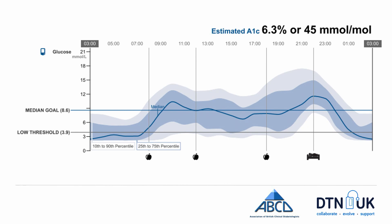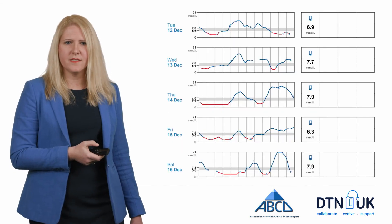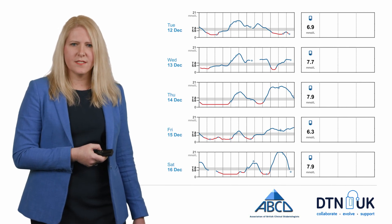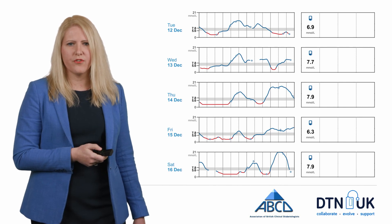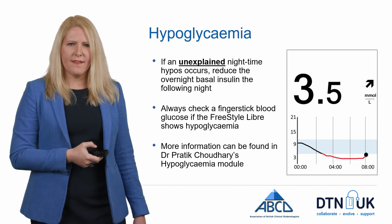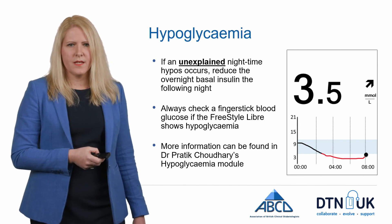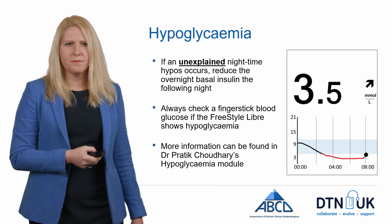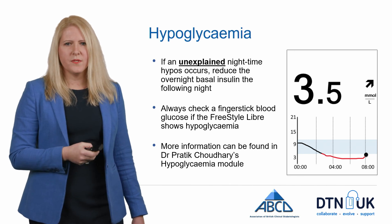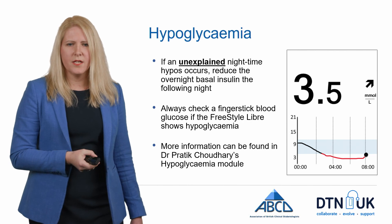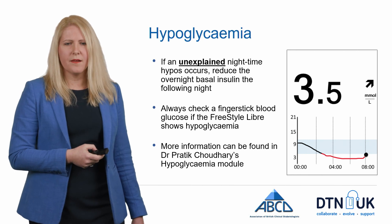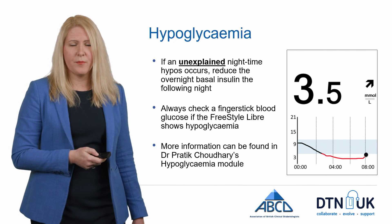Here's another example of an ambulatory glucose profile. The most striking thing is that the dark blue median line is in the hypoglycemic range overnight — and that's a concern. When you look at this on the daily traces it becomes very apparent that this person is experiencing quite a lot of hypoglycemia, related to the basal insulin being too high, as you can see the glucose falling during the night. So our word of warning: if you have unexplained hypoglycemia overnight, presume that your basal dose is too high and reduce it the next night. Also, if the Libre shows you're hypoglycemic, please check with a blood glucose, as the Libre isn't always as accurate in the hypoglycemic range and there's a lag time — blood glucose is more accurate in this instance. If you're interested in learning more about hypoglycemia, I would recommend Dr. Pratik Chowdhury's hypoglycemia module.